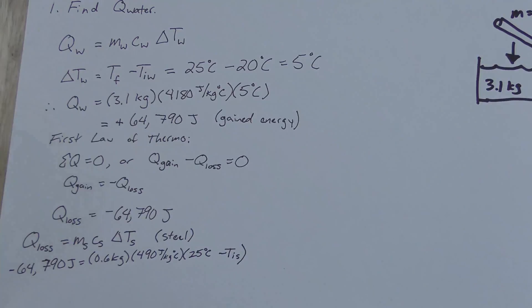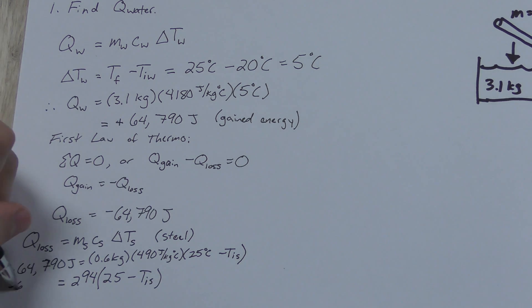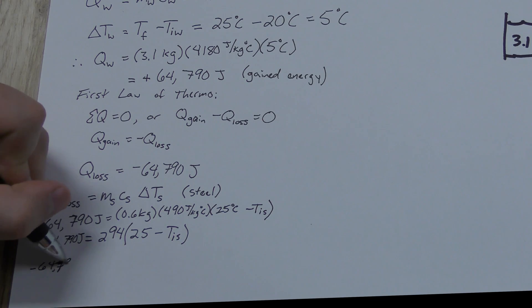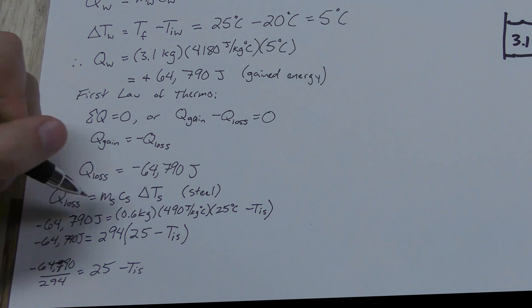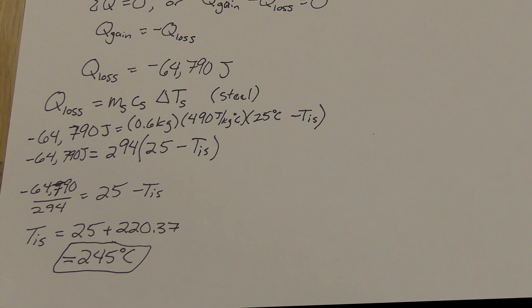So if we need to find a piece of information and we have everything else for the other substance, we can use this equilibrium idea to find what we need. Q equals negative Q, or MC delta T equals negative MC delta T.